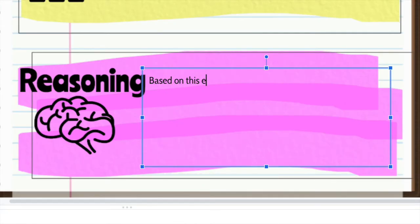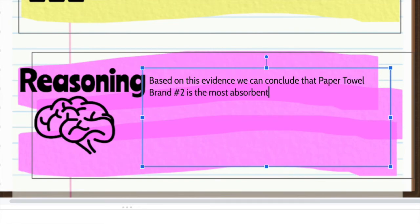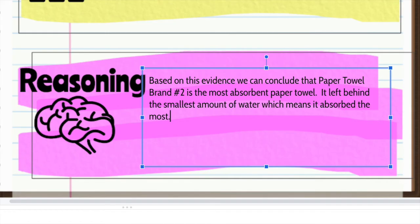So for my reasoning, I'm going to type that based on this evidence, we can conclude that paper towel brand number two is the most absorbent paper towel. It left behind the smallest amount of water, which means it absorbed the most.